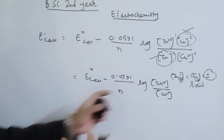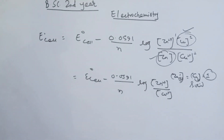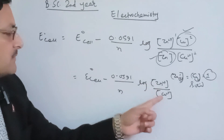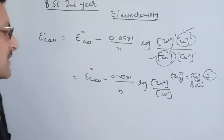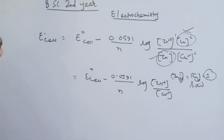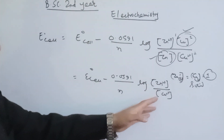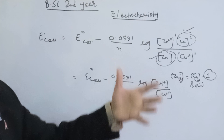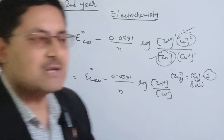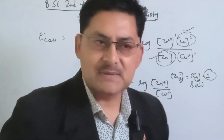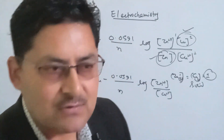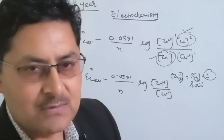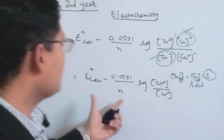We can see it is the oxidized form divided by the reduced form in the reaction quotient Q.